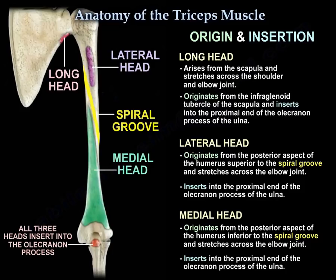The lateral head of the triceps arises from the posterior aspect of the humerus superior to the spiral groove and stretches across the elbow joint. The medial head arises from the posterior aspect of the humerus inferior to the spiral groove and stretches across the elbow joint.